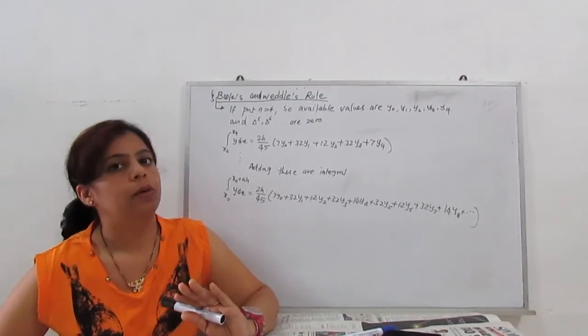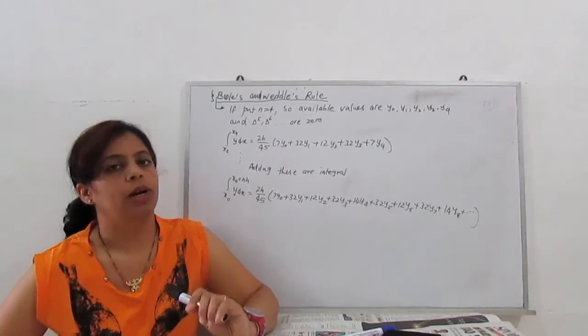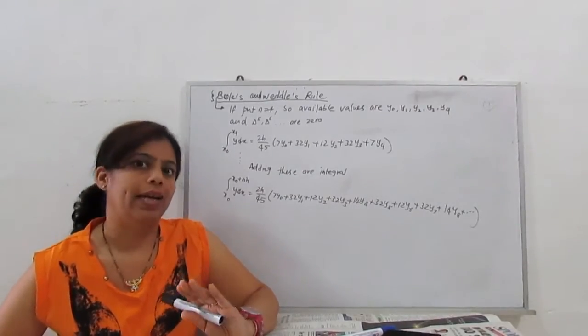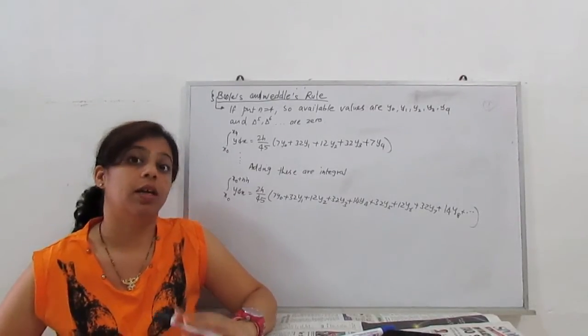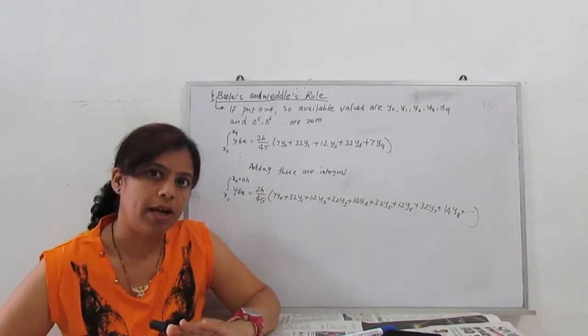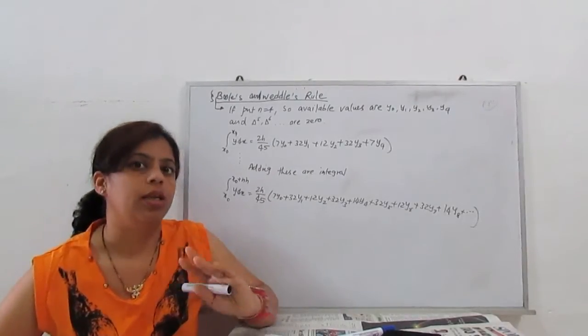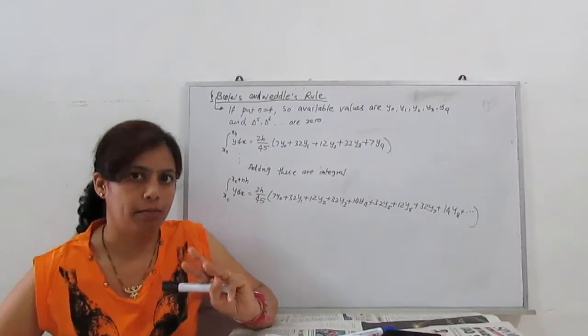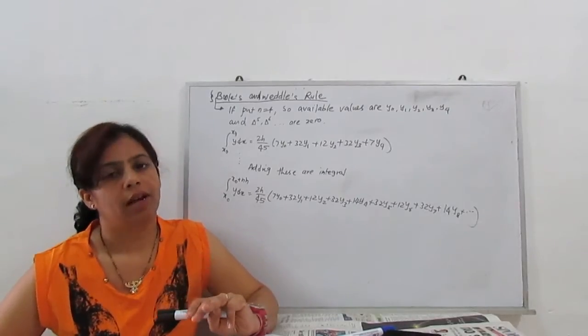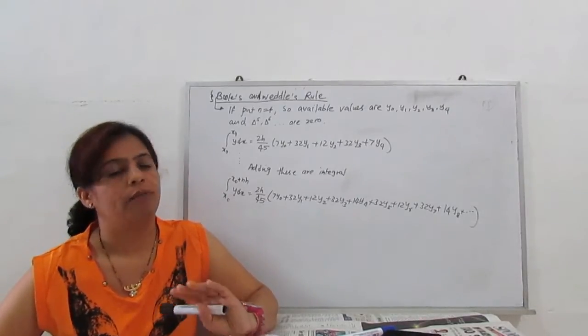For Simpson one-third rule we put n equals one. For trapezoidal, n equals one; n equals two for Simpson one-third; for Simpson three-by-eight, put n equals three. There are three terms basically: y0, y1, y2, or we can say f0, f1, f2.